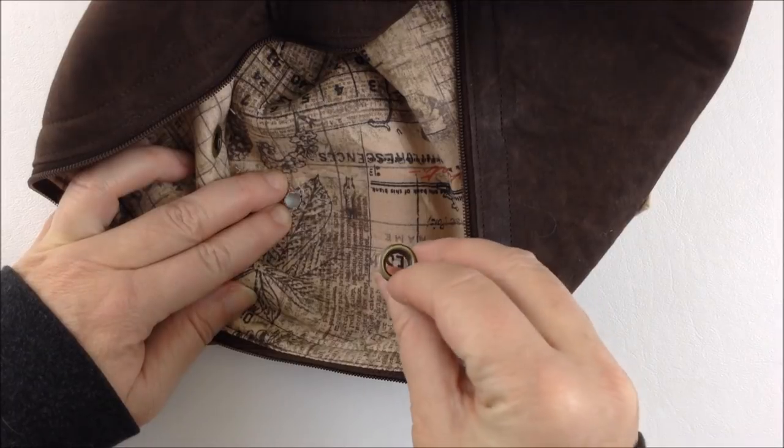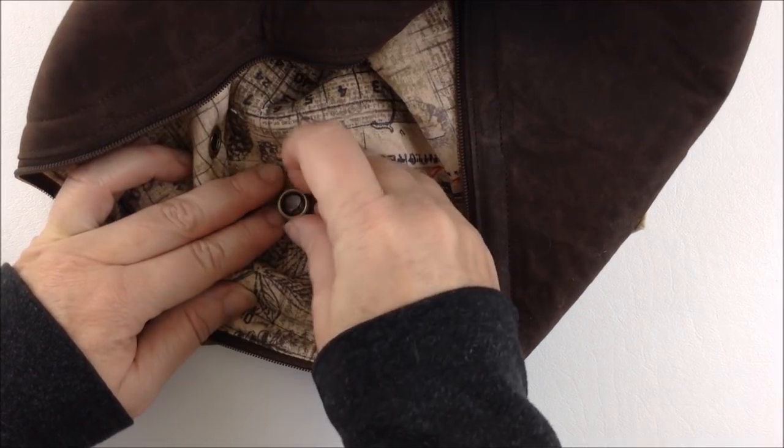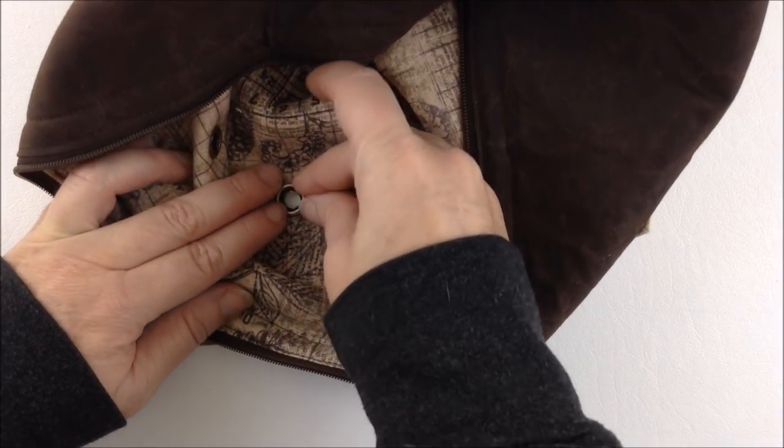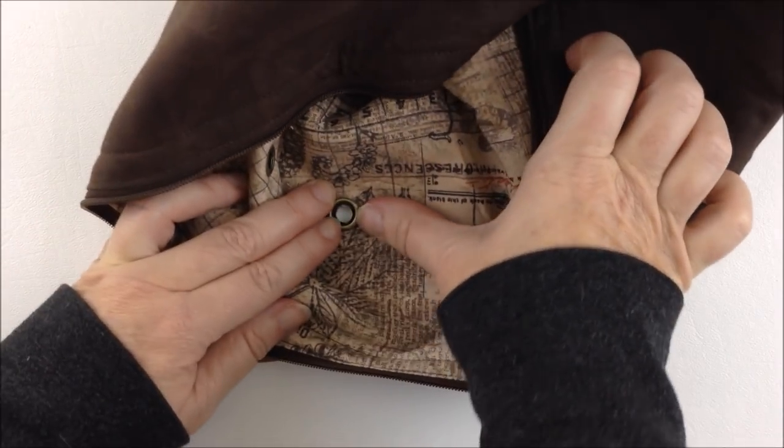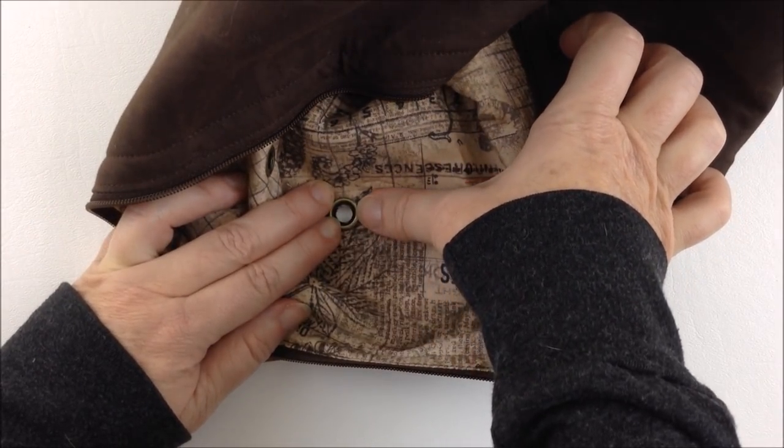Then flip it over and push the fabric around the hole around the eyelet. And then you'll take the one with the larger hole and place that over the top. Then you'll take your eyelet setter and hammer that in place.